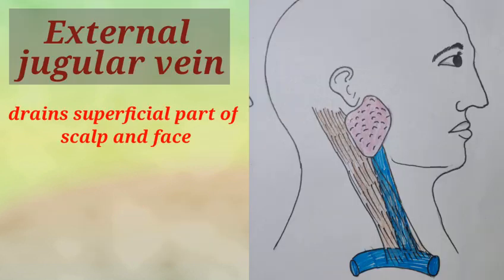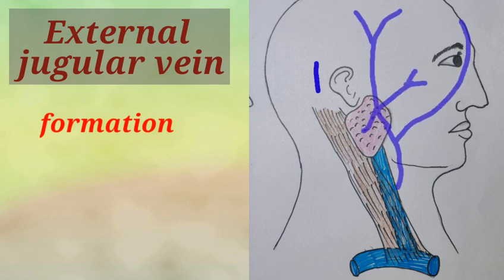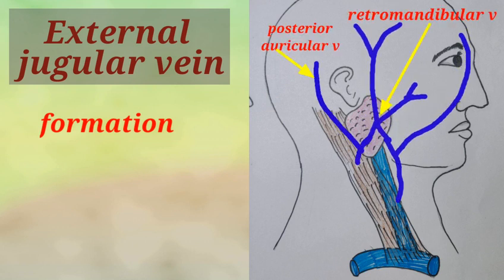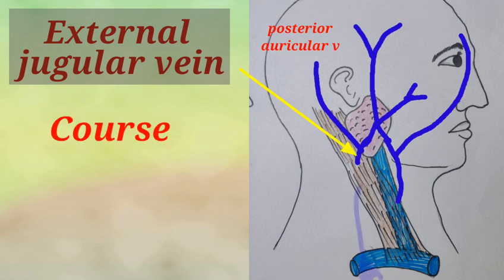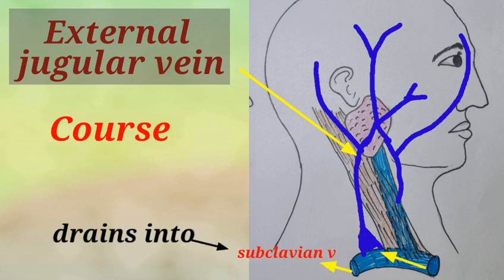The external jugular vein drains the superficial part of the scalp and the face. Its formation is by the union of the posterior division of the retromandibular vein with the posterior auricular vein. Its course is within the parotid gland below the angle of the mandible. It then runs obliquely downwards, superficial to the sternocleidomastoid and under cover of the platysma. On reaching the root of the neck in the supraclavicular triangle, it pierces the deep fascia and drains into the subclavian vein.